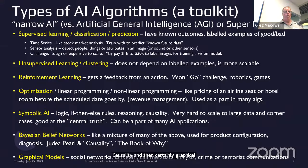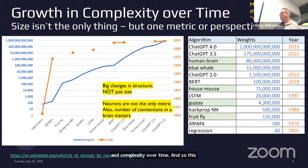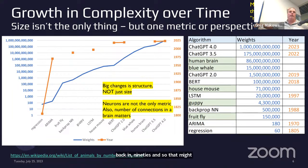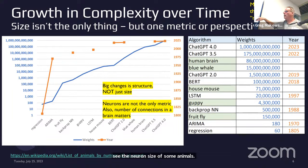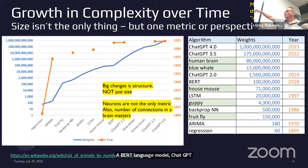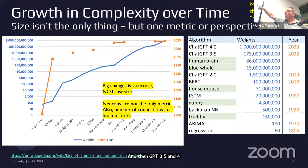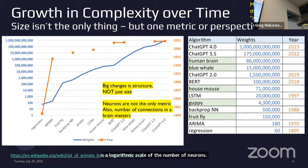Growth and complexity over time — this has just been over my career. I did regression models for targeted marketing back in the 90s with maybe 60 weights, invented in 1805. ARIMA models — you can see the neuron size of some animals. Back-propagation in the 80s, a guppy-sized model. Long short-term memory, getting into the 90s — a house mouse. A BERT language model, ChatGPT-2 at 1.5 billion. Then we're getting up to blue whale scale. Human brain: 86 billion neurons. GPT-3.5 and 4.0 are going much larger. The chart shows on the right the blue is a logarithmic scale of the number of neurons, and the gold is the year — showing the big jump over time.